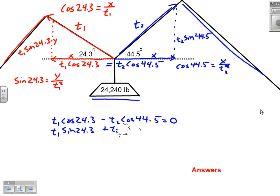That is T1 sin 24.3 plus T2 sin 44.5 equals 24,240. What we have here is a system of equations—in fact, it's a linear system. We could take this value, the negative cos 44.5, and the zero, this value, this value, and this value, and put that into a 2x3 matrix. We could row-reduce echelon form, or RREF, this guy.